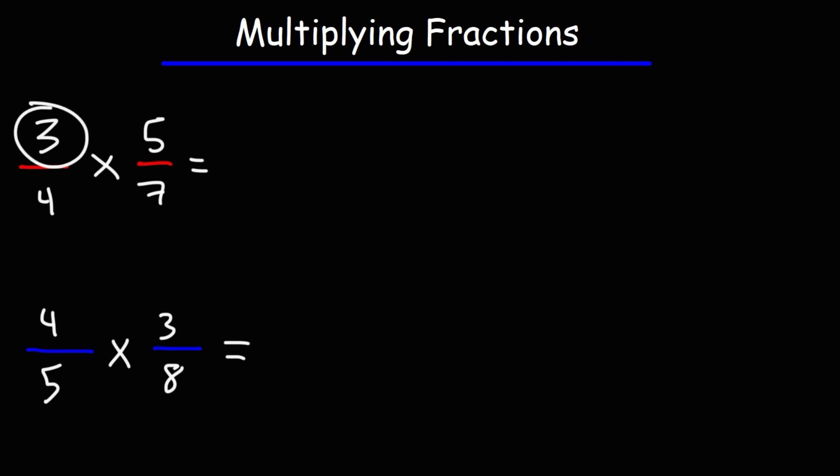3 times 5 is equal to 15. 4 times 7 is equal to 28. So that's how you can multiply fractions. You simply multiply across.